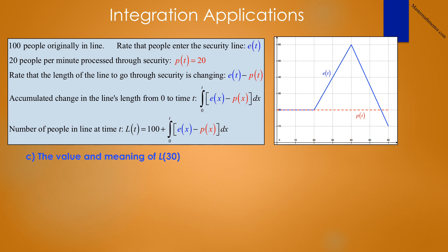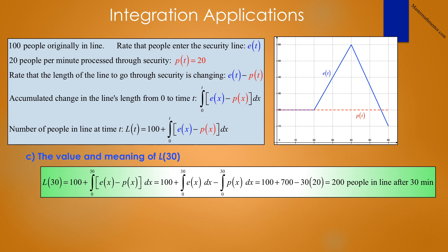Question c asks for the value and meaning of L(30). Using our formula, L(30) equals 100 plus the integral from 0 to 30 of e(x) dx minus the integral from 0 to 30 of p(x) dx, which is 100 plus 700 minus 30 times 20. We end up with 200 people in line after 30 minutes. This makes sense: in the first 20 minutes, people adding to the line are negated by people going through security, so we are only really adding extra people from t equals 20 to t equals 30.